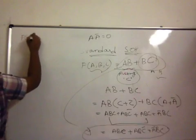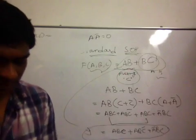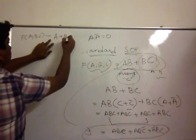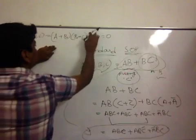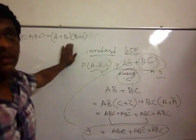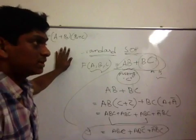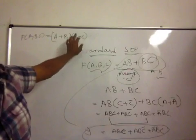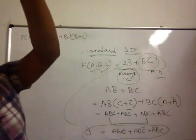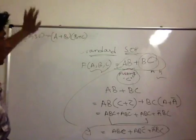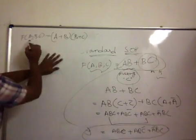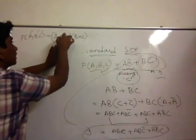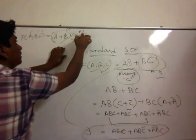So, let me write the POS as, this is the first example for product of sums. POS is A plus B into B plus C. This is my POS. This is a sum and this is a sum. This is a product. So, it is product of sums. This is a max term and this is a max term. But, I want it in standard POS form. You don't have all the variables in this. I have A, B, C here. This function is of A, B and C. But, I have no C here. Where is C? And I have no A here. Where is A?